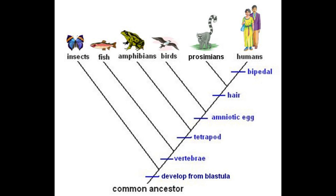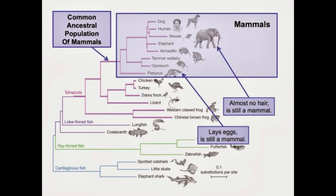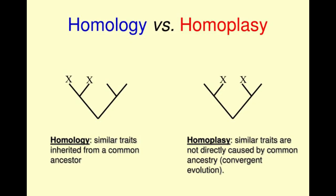This line then split into two. One line gave rise to amphibians, the other developed into bearing amniotic eggs. This line then split into two — one line gave rise to birds, the other developed hair. This line then split into two, with one line giving rise to the prosimians and the other becoming bipedal and leading to humans. Following this line of reasoning, we can see how lines split during evolution, leading to a common ancestor of mammals, which then further split into monotremes, marsupials, and placental mammals.